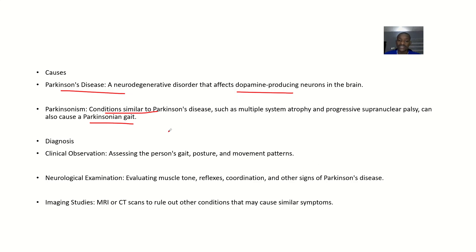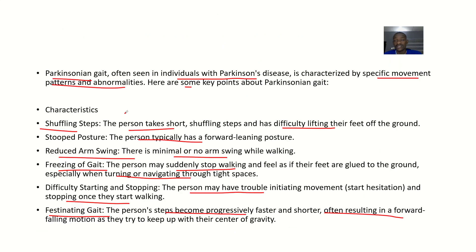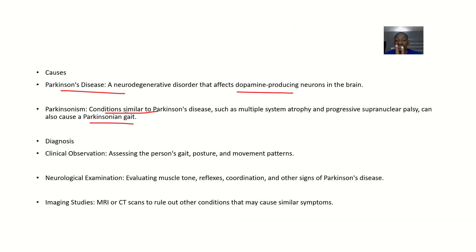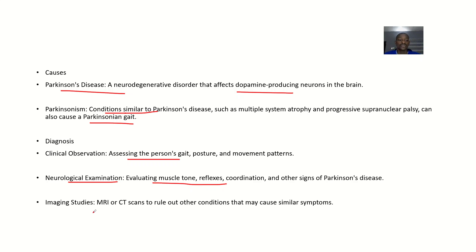For diagnosis: once you know the characteristics of the gait, you can observe the patient and identify the gait type. You assess the person's gait, posture, and movement patterns. A neurological examination evaluates muscle tone, reflexes, coordination, and other signs of Parkinson's disease — such as rigidity, tremors, and ataxia. Imaging studies like MRI and CT scan can help rule out other similar conditions.